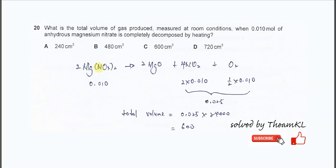The decomposition of this group 2 nitrate will form a solid residue - in this case, magnesium oxide - and two gases: NO2, the brown gas, and oxygen gas.